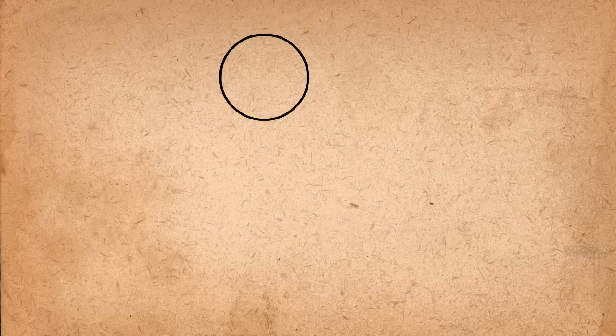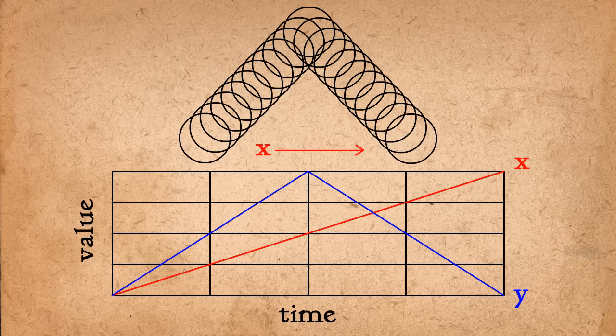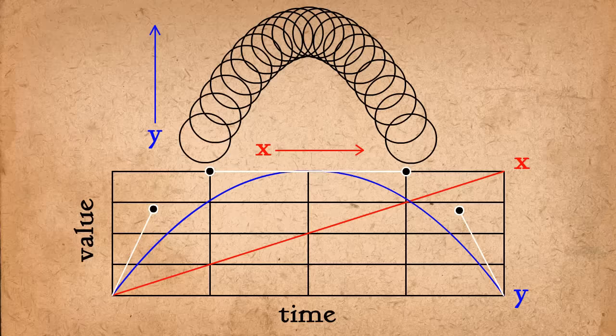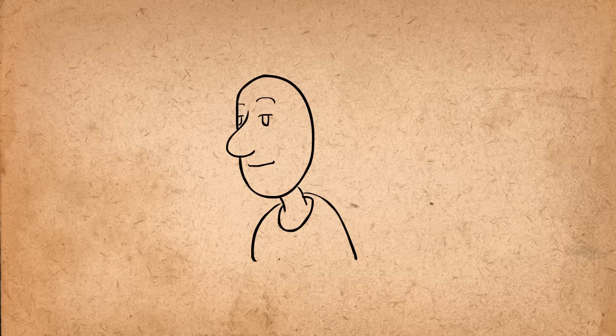Of course we also need to consider the slow in and out caused by gravity. When doing this in 3D and motion graphics, we can achieve this effect by keeping the movement in the x-axis constant, but giving the movement in the y-axis a slow in and slow out. This will give the ball its arc.